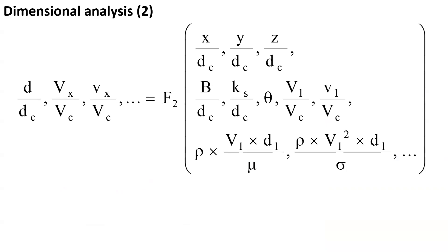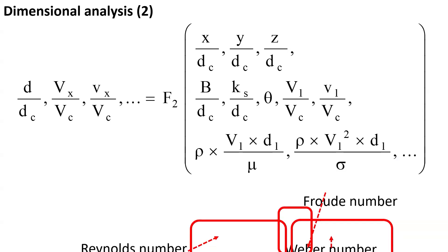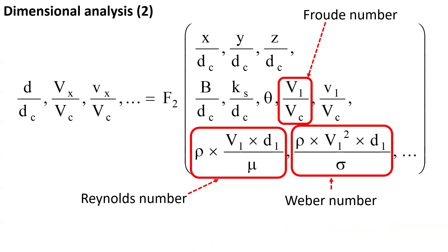This is illustrated by rewriting the same relationships in dimensionless form. We have the dimensionless flow properties within the channel as a function of the dimensionless location and a number of dimensionless parameters, among which we can recognize a Froude number, a Reynolds number, and a Weber number.